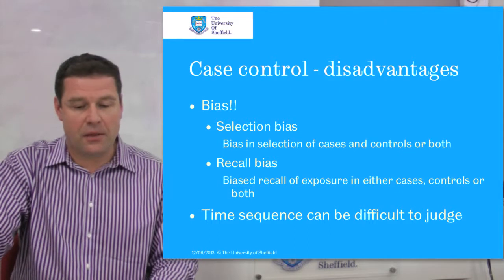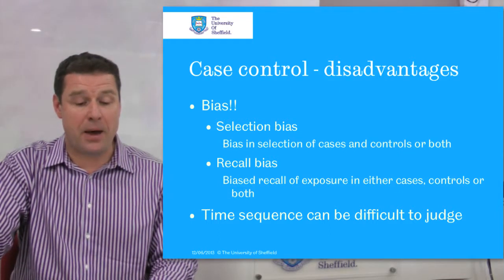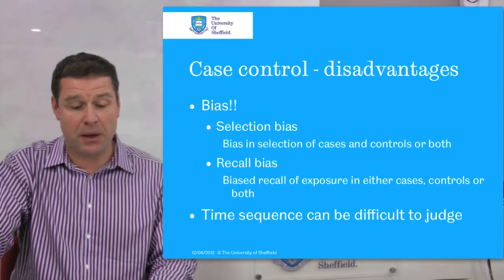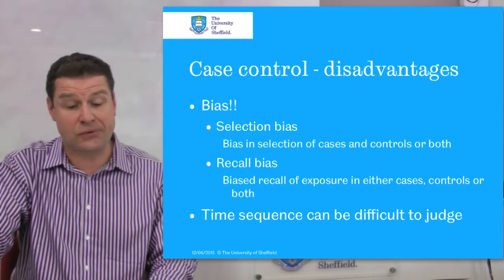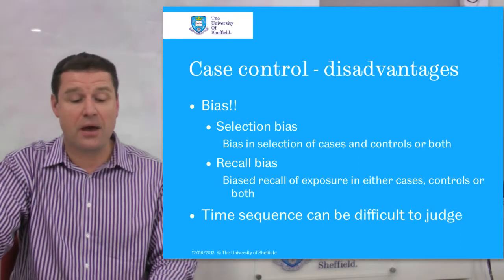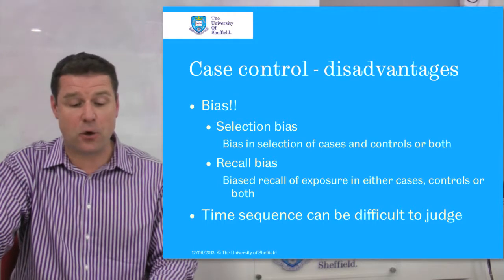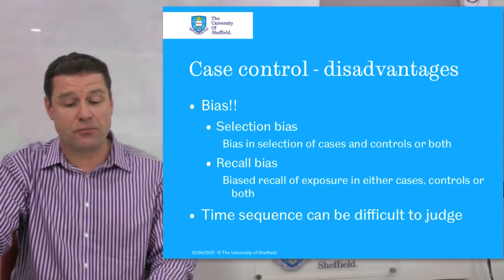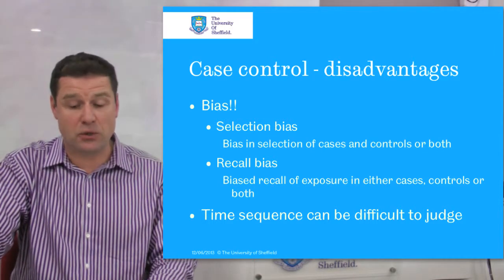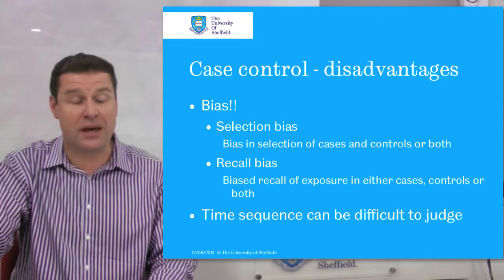However, case control studies have serious disadvantages, mainly around bias. There is selection bias — bias in the selection of cases and controls, or both. And also, like cohort studies, they have problems with recall bias — bias in terms of the recall of the exposure in the cases, the controls, or both.